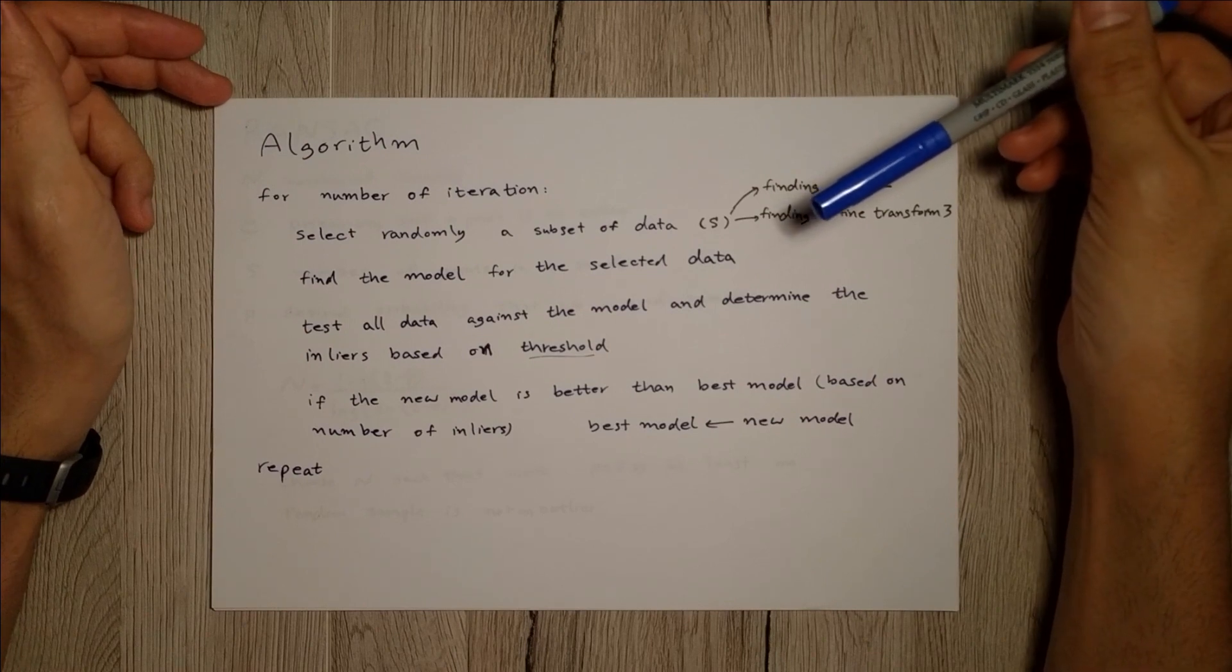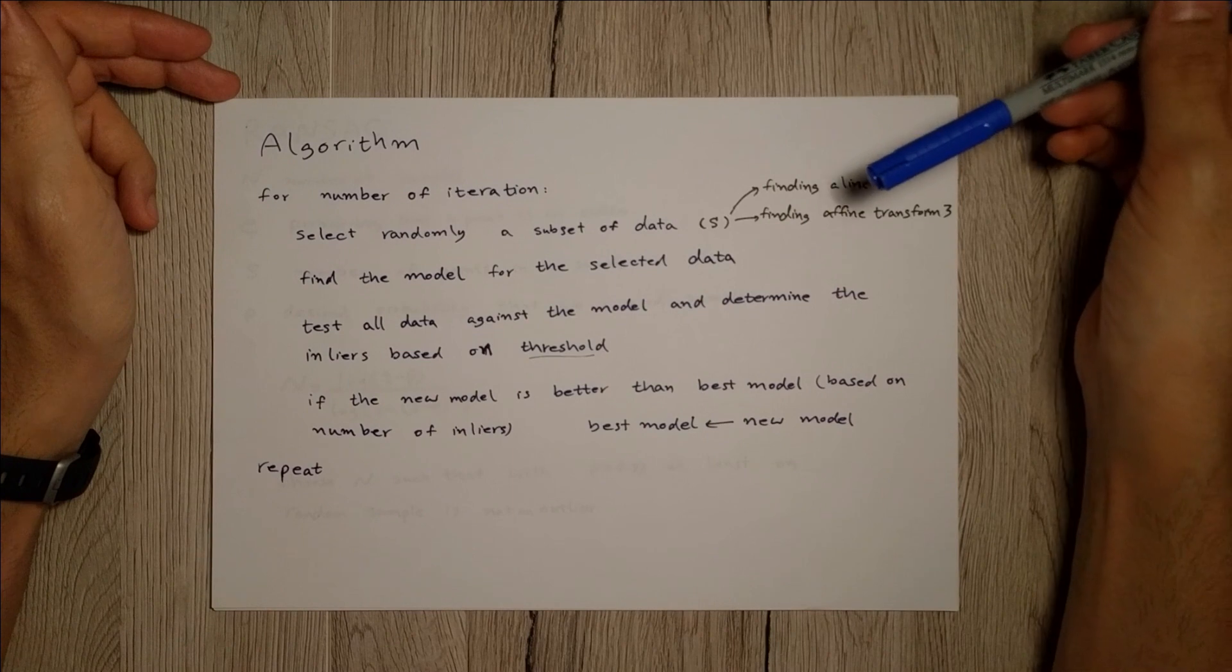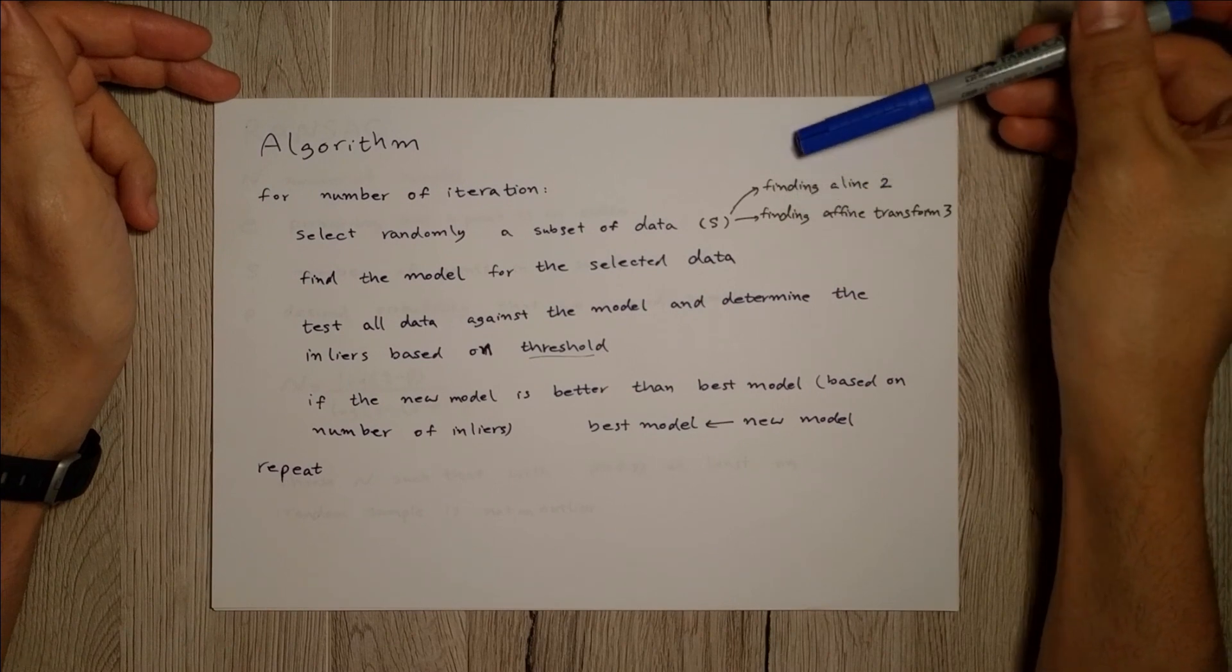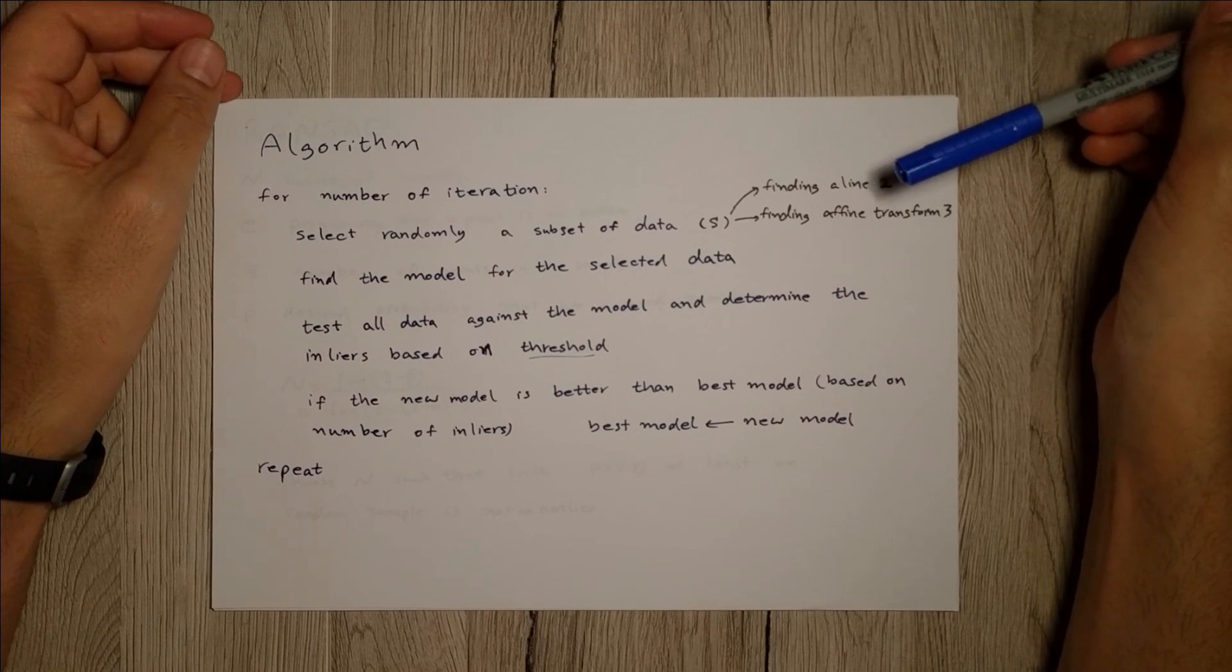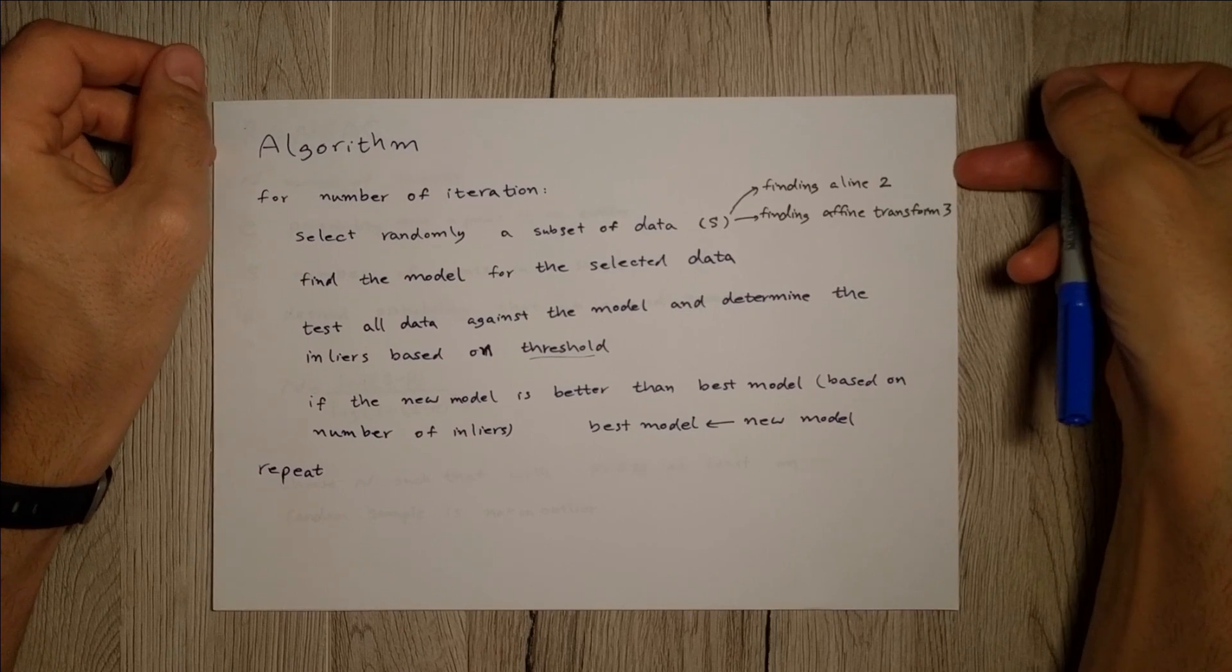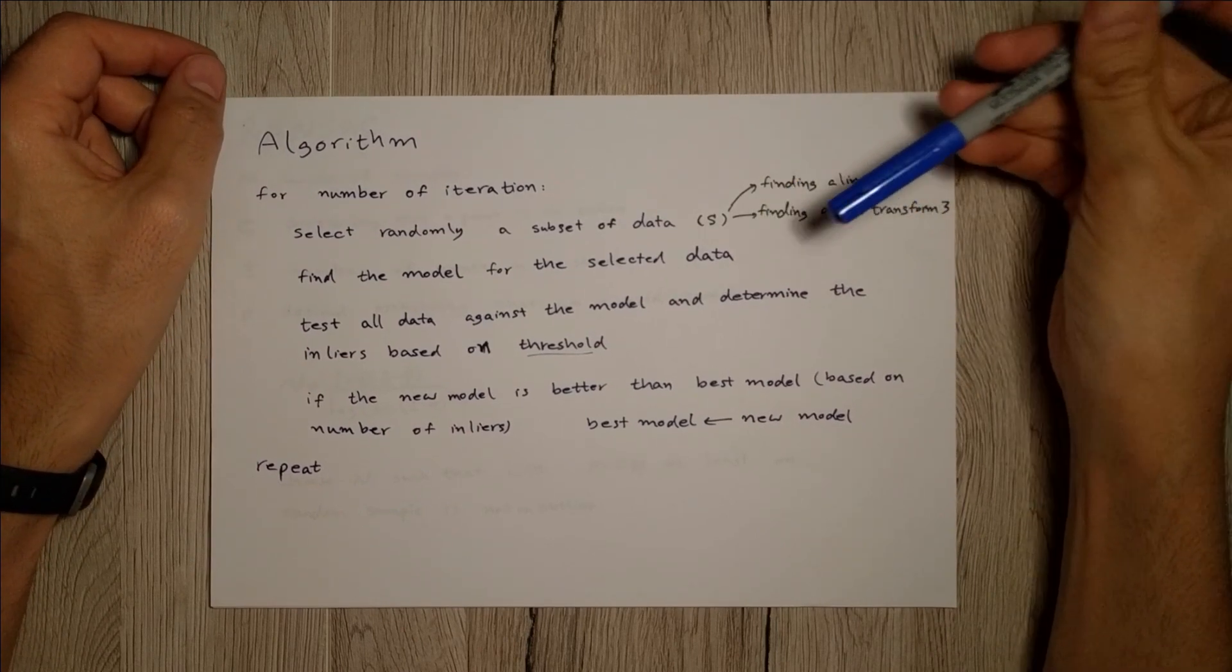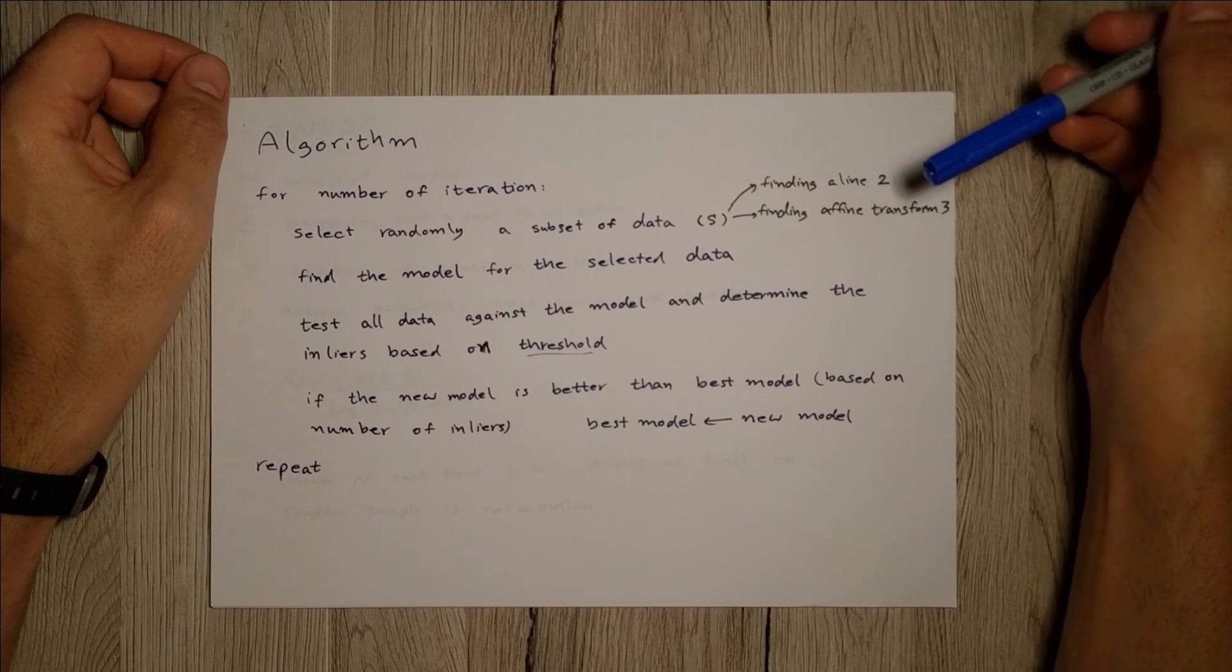As I said, if it's a line, then try to find the M and B. If it's an affine transform, you have to find the translation and rotation. This is something that again depends on the problem that you're solving. In my case, I solve it for finding an affine transformation.